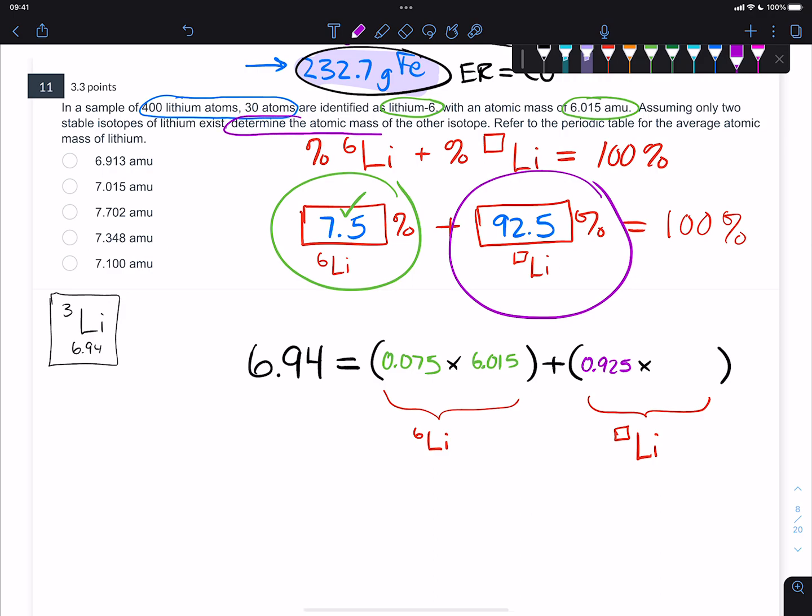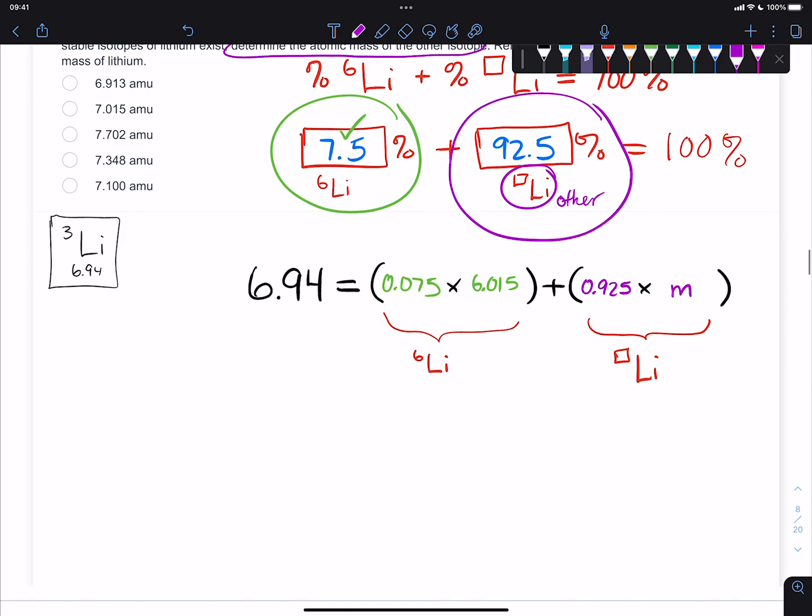Turns out we don't know the mass of the other isotope. That's actually what you're solving for. It says determine the mass of the other isotope. We know the percent and the mass for the first isotope. We know the percent for the second isotope, we just don't know the mass. I'm going to put m here as a placeholder. This is where you do algebra.